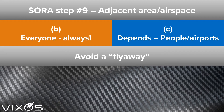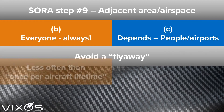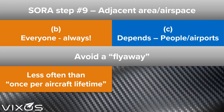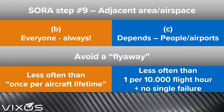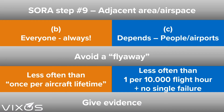Part B, which everyone must comply with, requires that a flyaway happens less often than once per aircraft lifetime. Part C requires that a flyaway happens less often than once per 10,000 flight hours, and that any single failure on the drone cannot result in a flyaway. It is clearly stated in the text to step nine that you need to give evidence that you are able to comply with these requirements. In other words, it is not enough to just state in your operations manual that you have a solid and well-functioning drone, or that you know for a fact that it complies with the requirements.